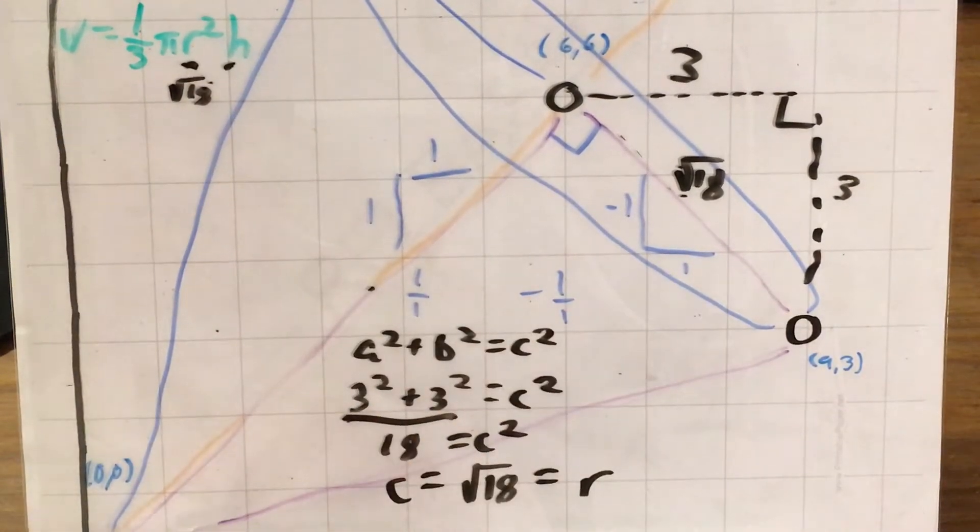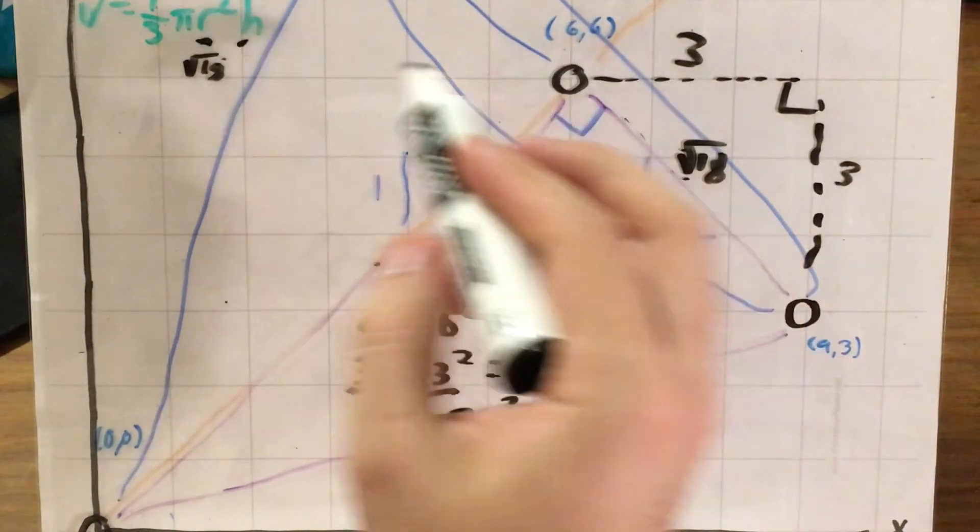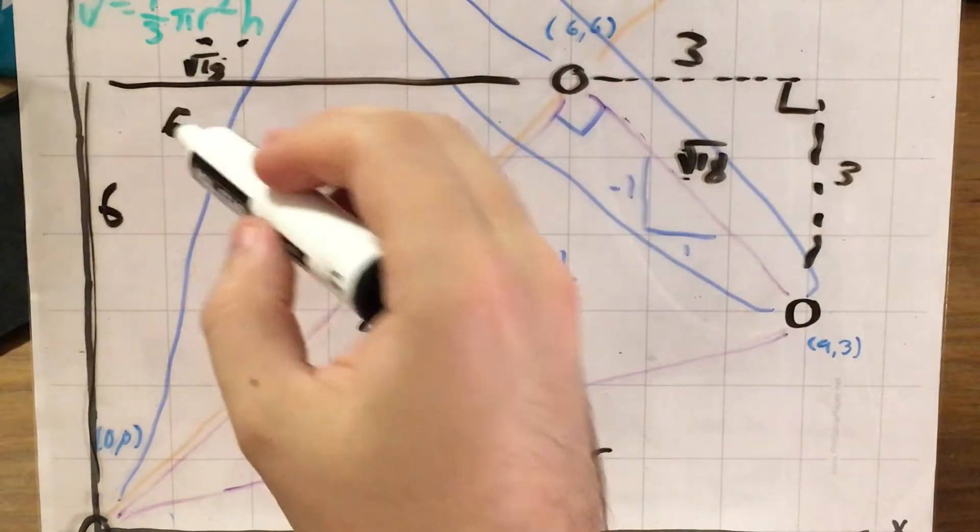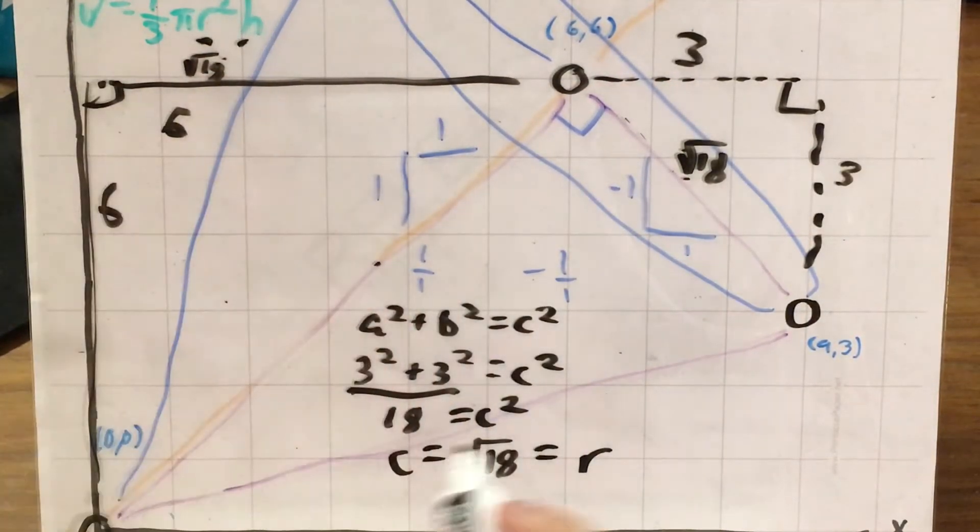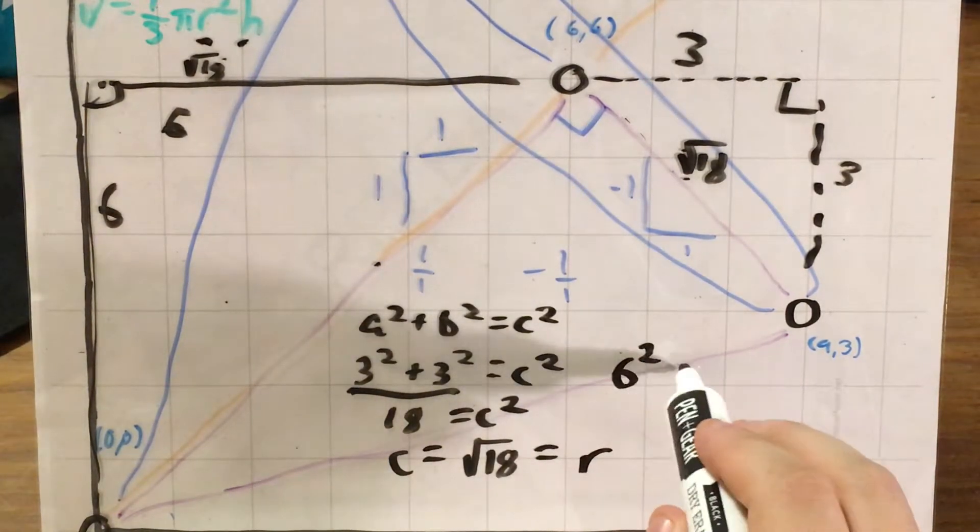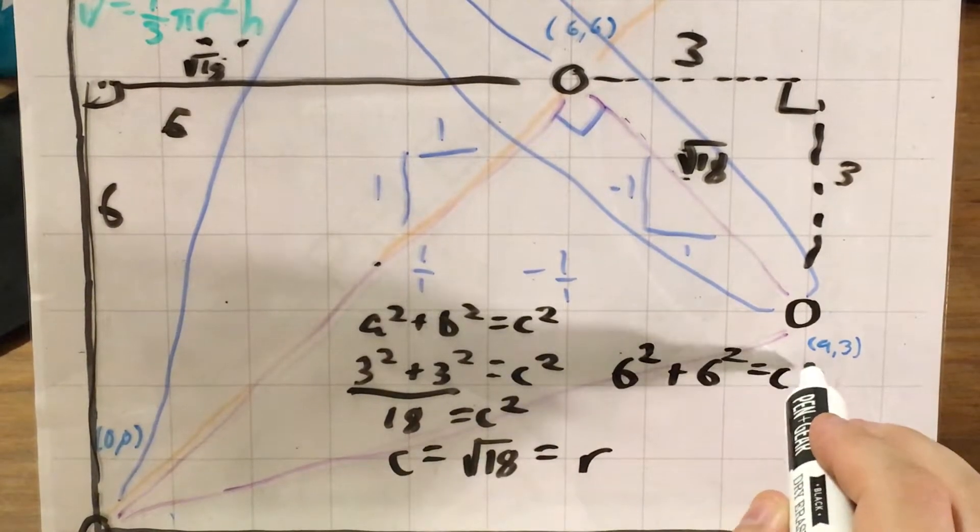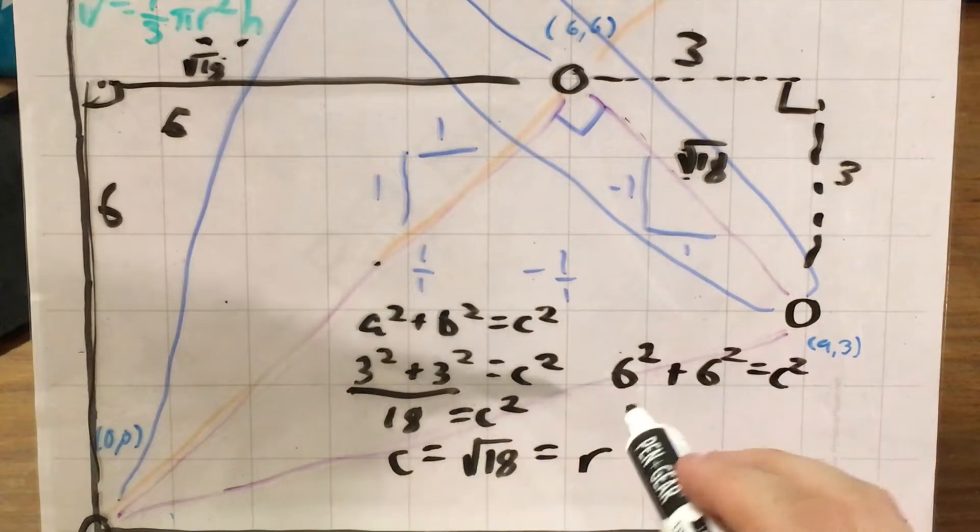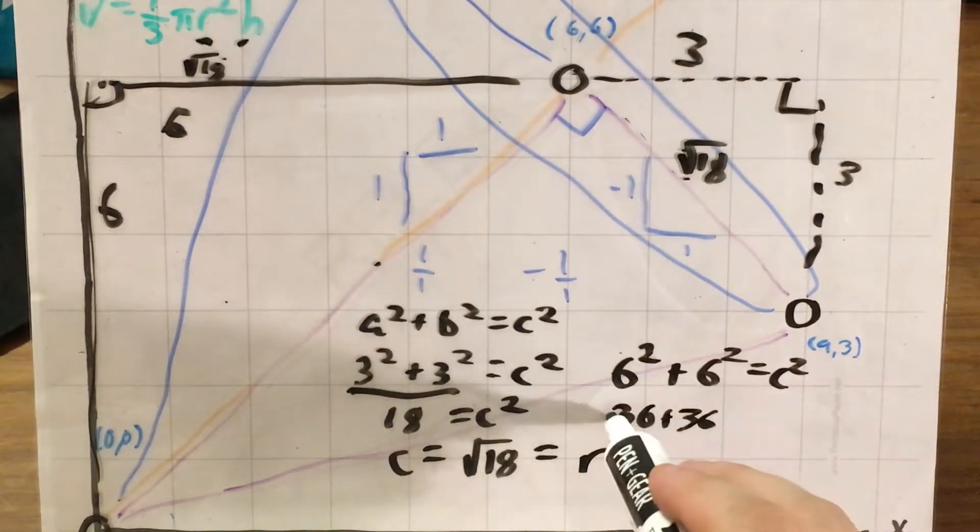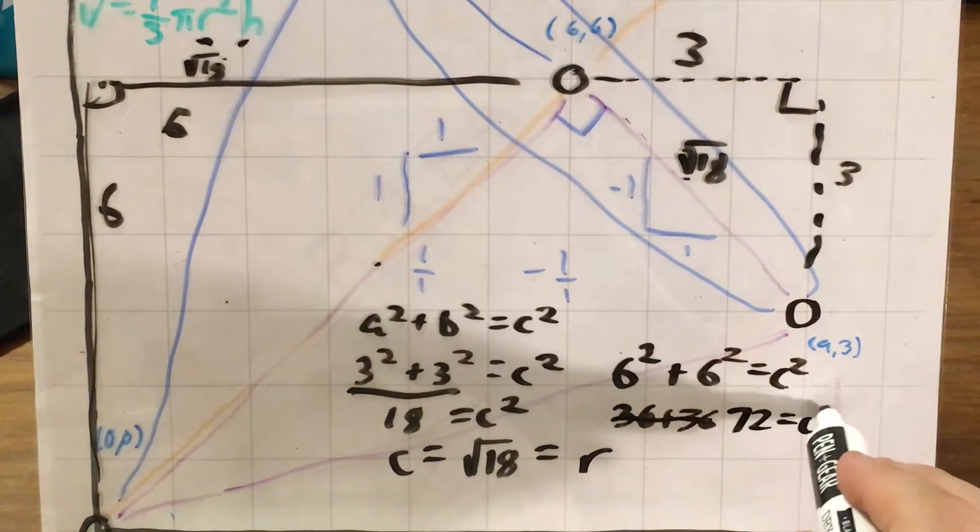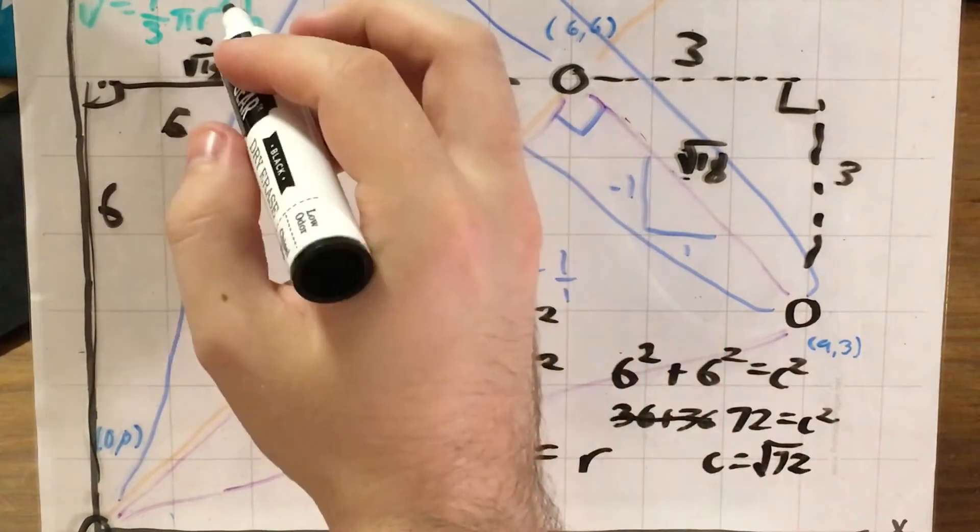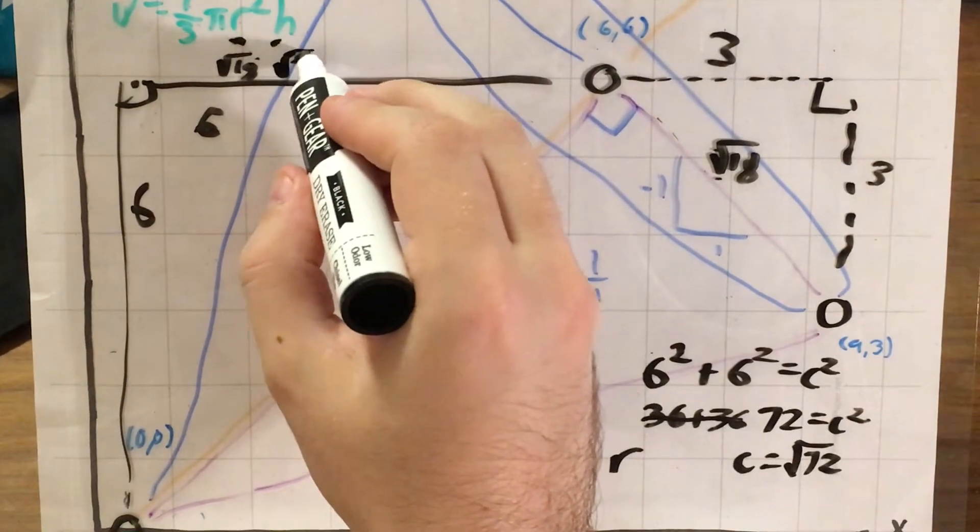Now I need my height from (0,0) to (6,6). I can probably already guess that I'm going up 6 and right 6. These make a right triangle, and I'm going to use Pythagorean theorem all over again. Except this time, my a is 6, my b is 6, and my c now represents the height of that cone. So this is 36 + 36, also known as 72. So 72 = c². Then c equals the square root of 72. So that's my height.